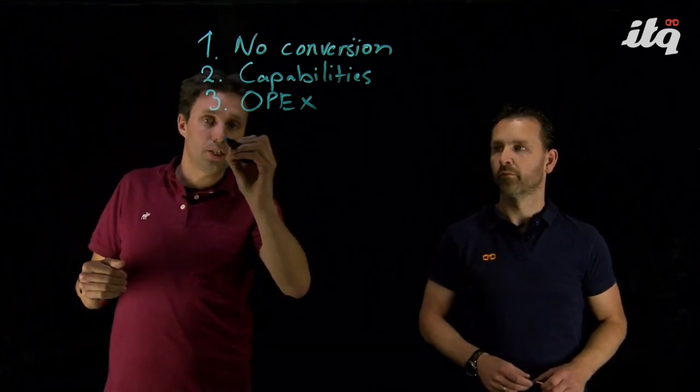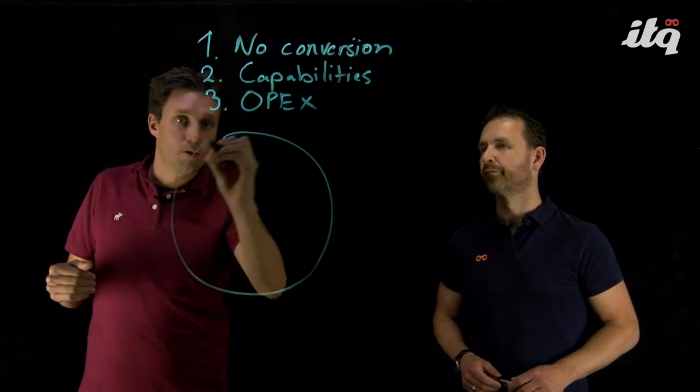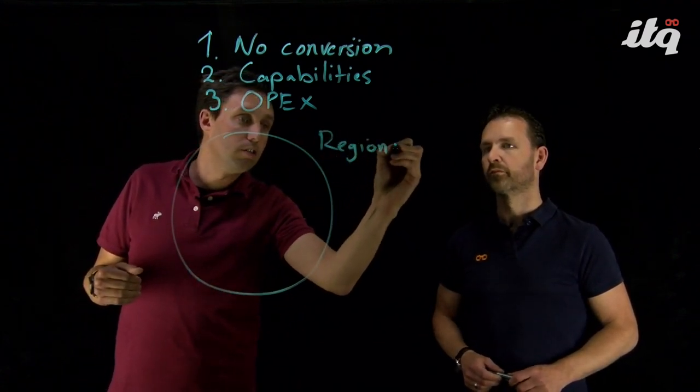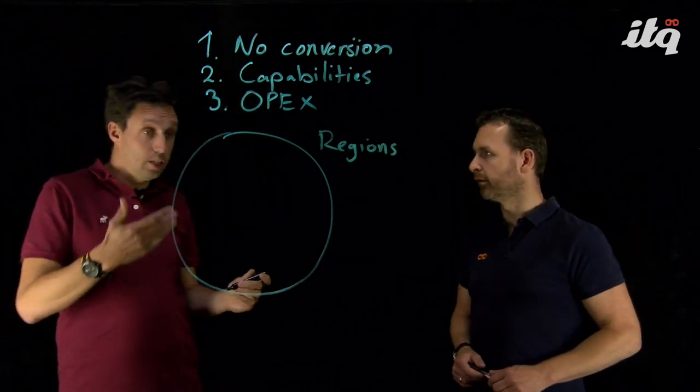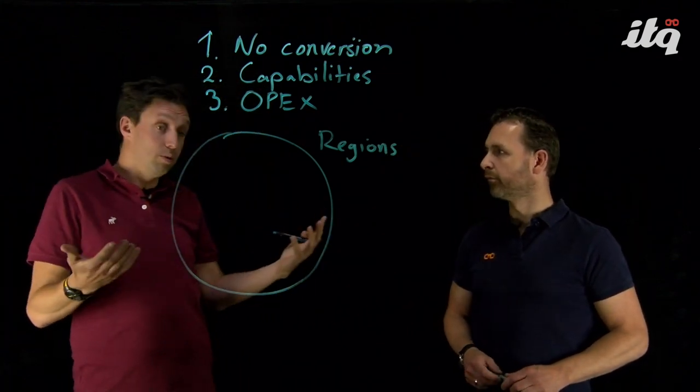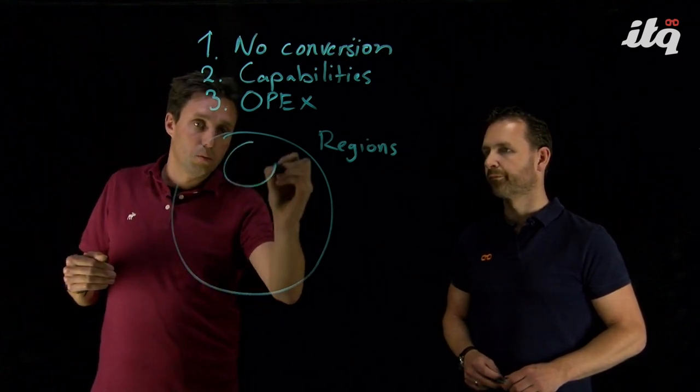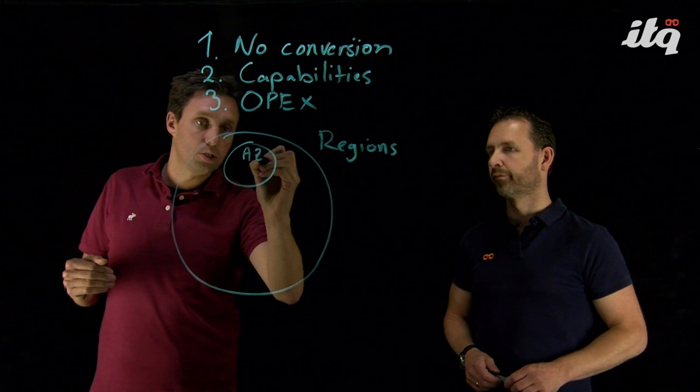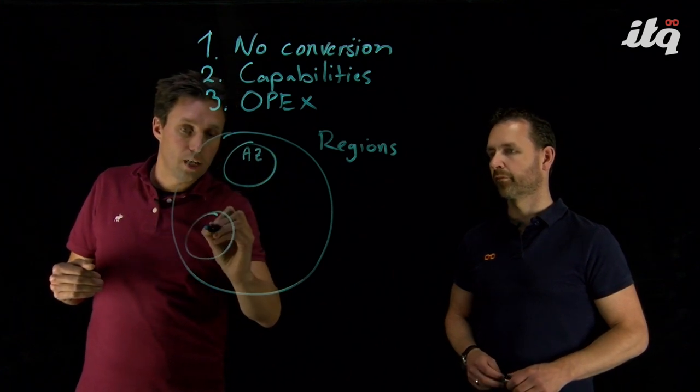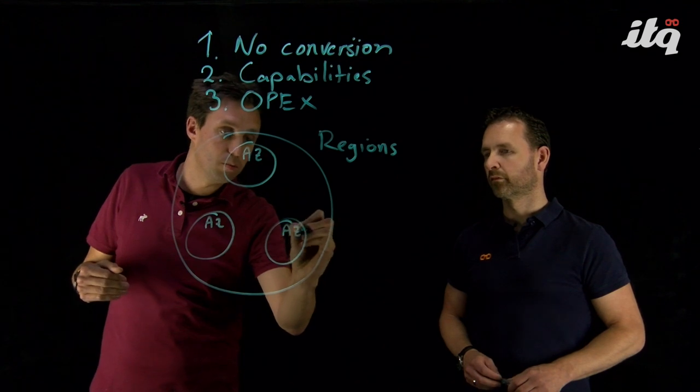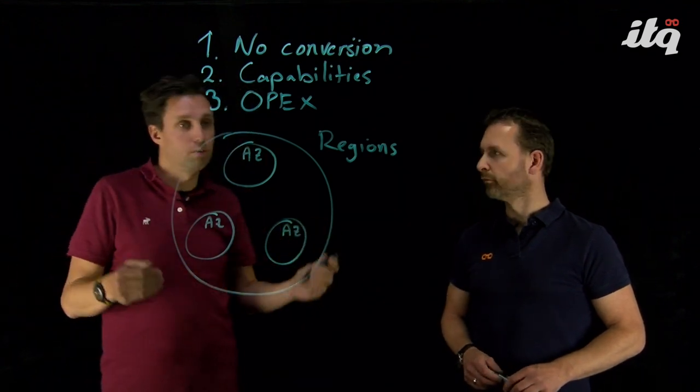So AWS is using what we call a region. And regions are available throughout the world. An example region here in Europe is, for example, Frankfurt. And in a region, there are what they call availability zones. And most of the time, there are three availability zones available in a region. Depends a bit on the region.